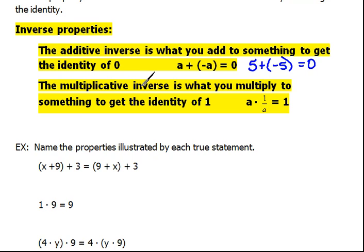Under multiplication, for multiplicative inverses, you're trying to get the identity, which is 1. So, in order to get that, we have to look at what do we multiply to a number to get 1.